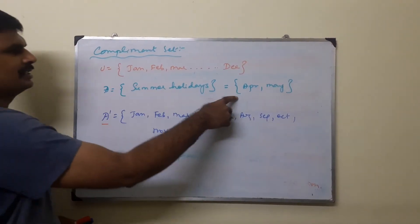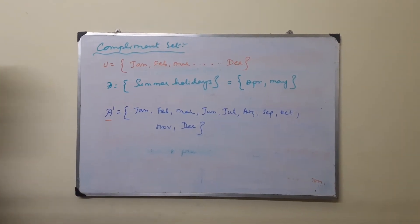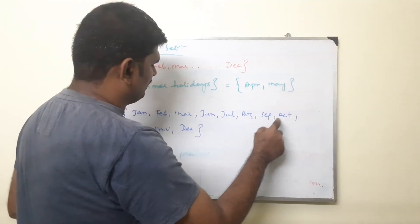Now in the simple complement of A, that means A dash, complement of A. So that will be one set, and A is available to U, October.